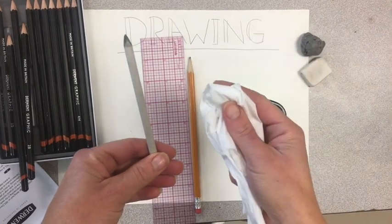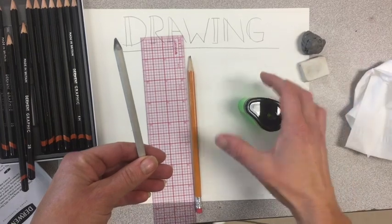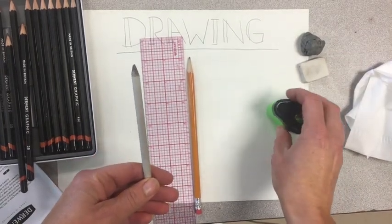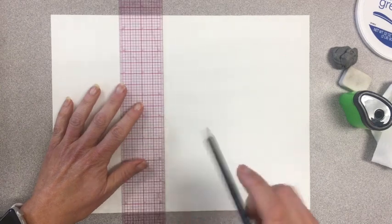So the first thing that we are going to do is we are going to shade a cylinder. To shade the cylinder, we need to draw one out. So you need a ruler, or you can use a piece of paper to draw it straight if you'd like.